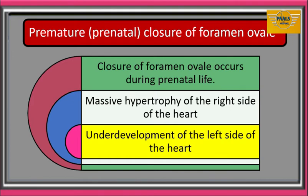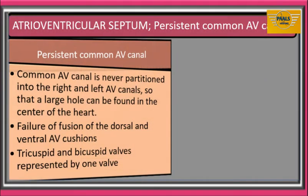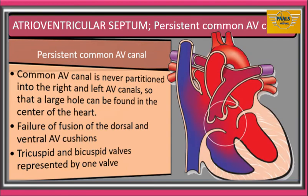Premature closure of foramen ovale will result in massive hypertrophy of the right side of the heart and underdevelopment of the left side of the heart. We will now consider atrioventricular septal defects. The first one is persistent common AV canal — a condition in which the common AV canal is never partitioned into the right and left AV canals, so a large hole can be found in the center of the heart. This is caused by failure of fusion of the dorsal and ventral AV cushions.